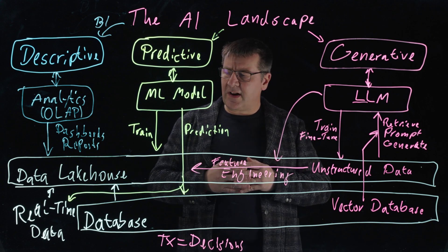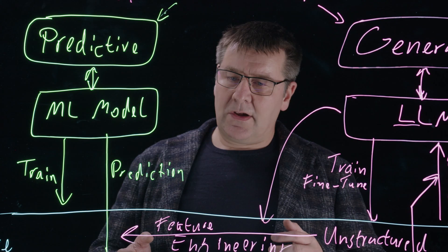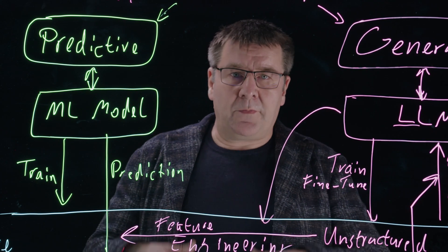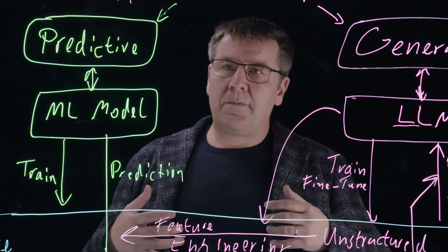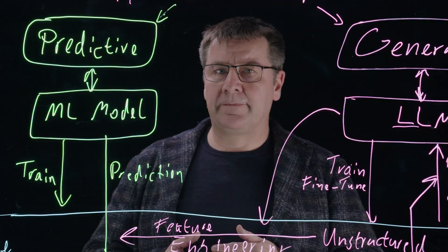Generally speaking, you can look at real-time data as telemetry data. Telemetry data about IT, like log messages, about people, like click streams, or about the real world. This is IoT messages that are coming in from your devices. Thank you very much. This has been our overview for the AI landscape.